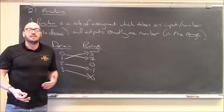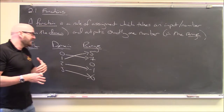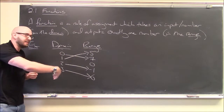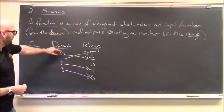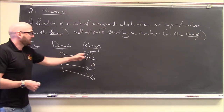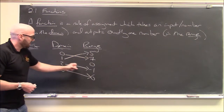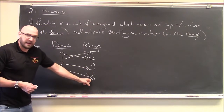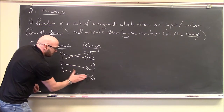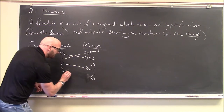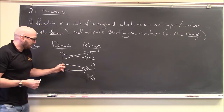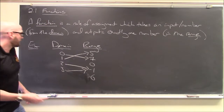Think of a function like a machine — you plug in a number, you get out a number. Two different inputs are allowed to output the same number; there's nothing wrong there. For example, if both 2 and 3 output −1, that's totally fine.